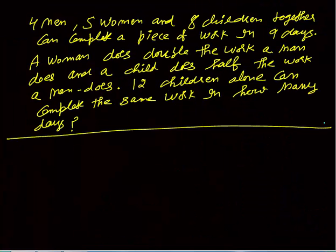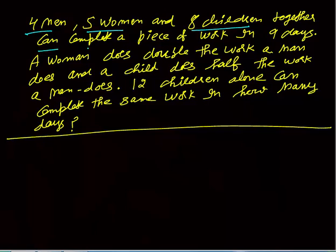The next question says: four men, five women, and eight children together can complete a piece of work in nine days. A woman does double the work a man does, and a child does half the work a man does. Twelve children alone will complete that work in how many days? These kinds of questions seem difficult, but they are very easy and can be solved in less than a minute.